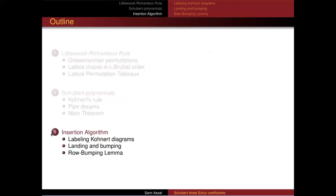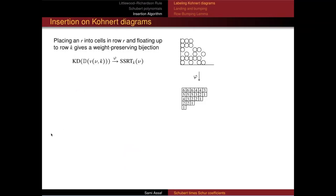The next thing I'm going to tell you is the insertion algorithm that proves the theorem. First I have to tell you how to label a corner diagram, then I'll tell you what landing and bumping look like, and then we'll observe the row bumping lemma, which is the crux of why this insertion works.